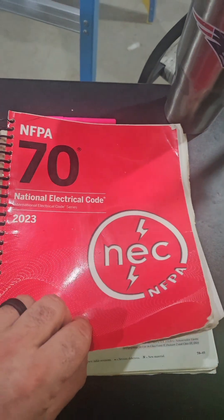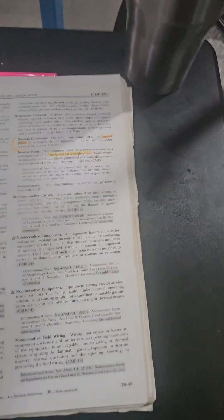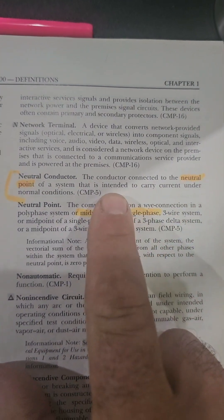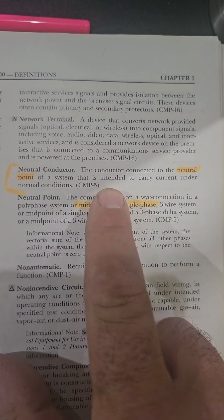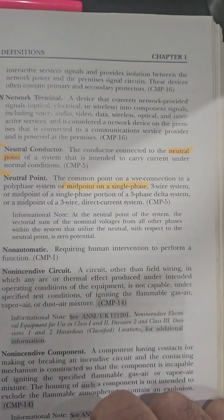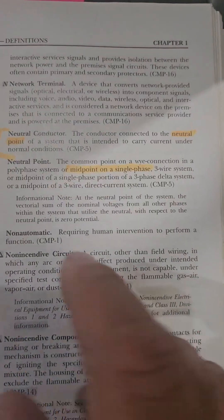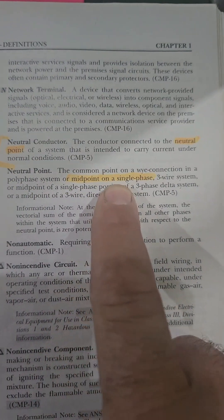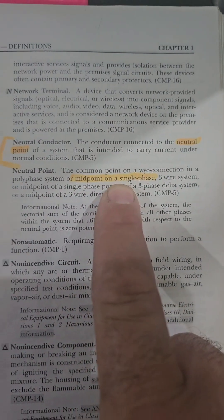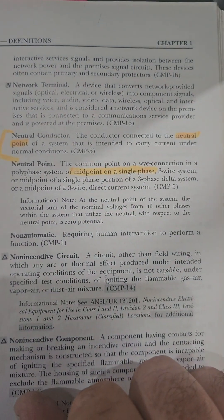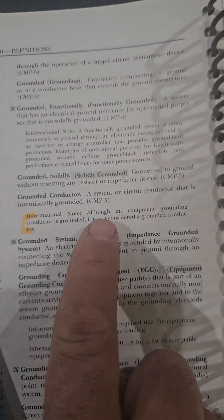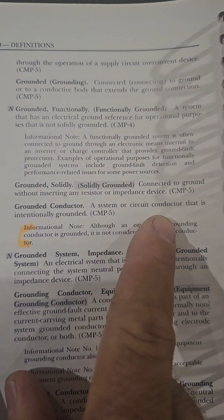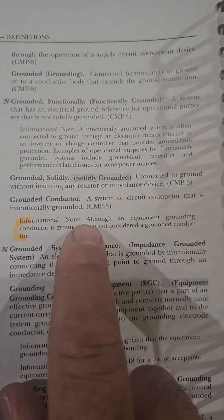2023 NEC definitions. Neutral conductor: the conductor connected to the neutral point of a system that is intended to carry current under normal conditions. The neutral point is the midpoint of a single-phase system. Grounded conductor: a system or circuit conductor that is intentionally grounded.